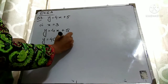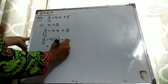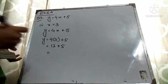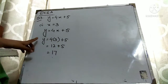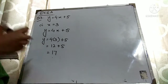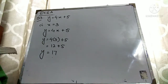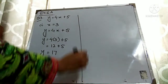So y equals 4 times 3 plus 5. Four 3s are 12, and 12 plus 5 equals 17. So when x is equal to 3, the value of y is 17. In the same way, you will do the second part.